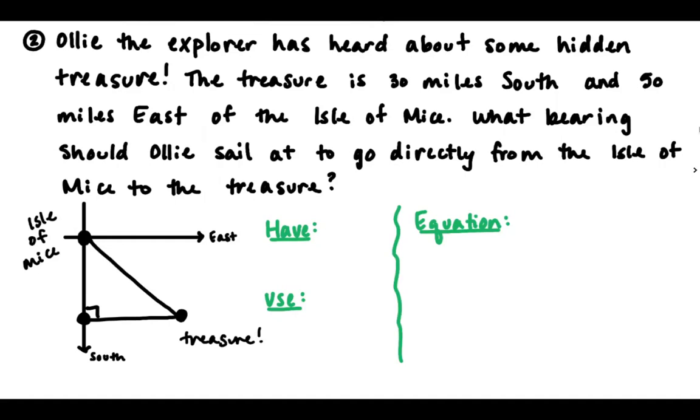Now let's label it with what we know and what we want. So first thing we know is that the treasure is 30 miles south. So the distance we went south was this vertical distance down, we went down, and that is 30. And then 50 miles east, right? So here's how far we went east to get to the treasure. So that's going to be 50.